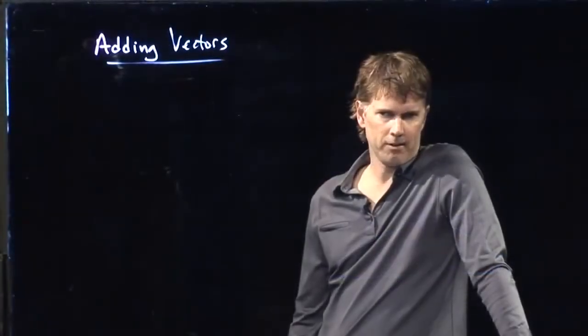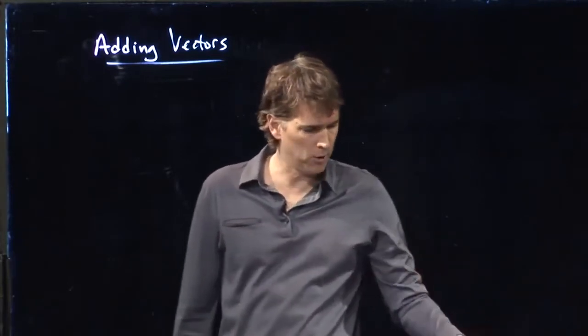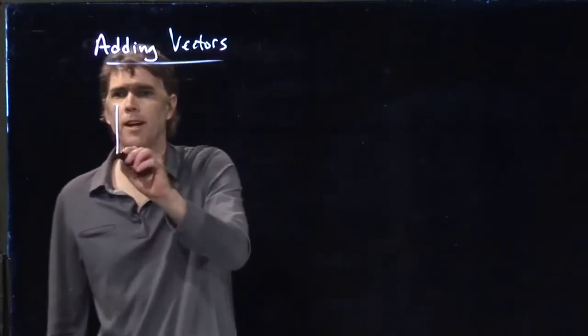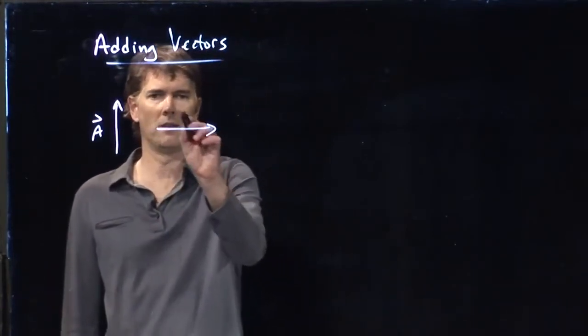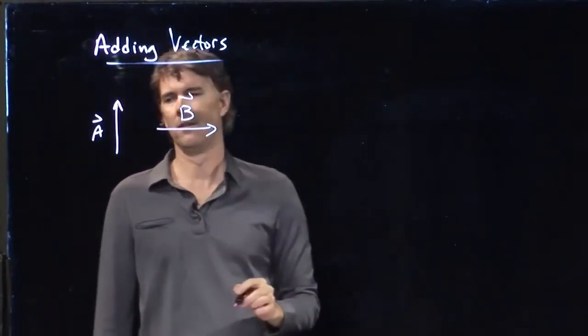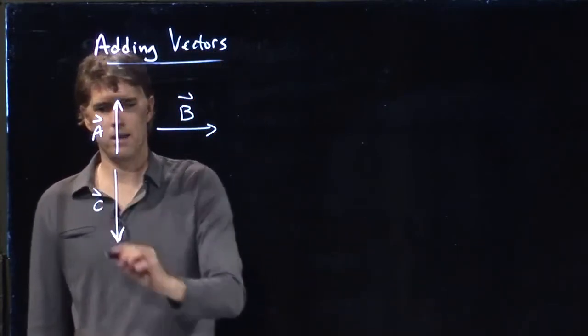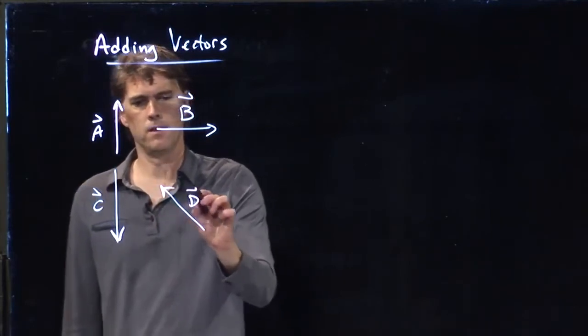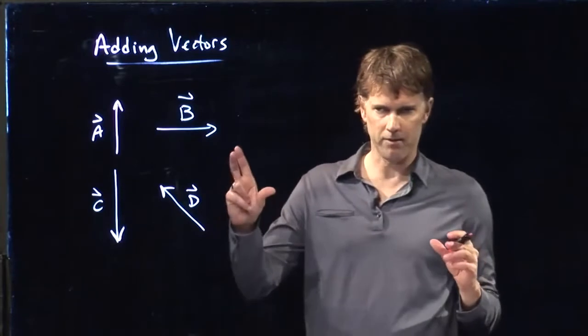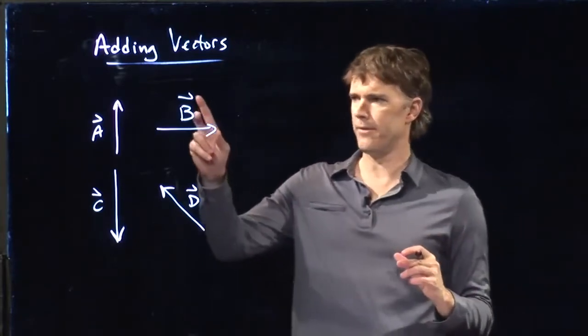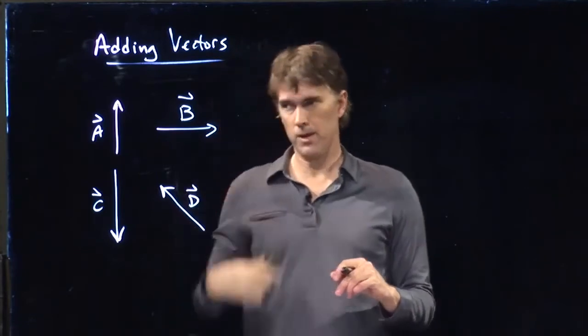Let's talk about adding vectors when we have more than just two vectors. And let's say we have a whole bunch of them. Let's say we have vector A that looks like that. Vector B that looks like that. Vector C that looks like that. And vector D that looks like that. And they each have a length. That's the magnitude of the vector. And they each have a direction indicated by the arrowhead. How do we add these things up?